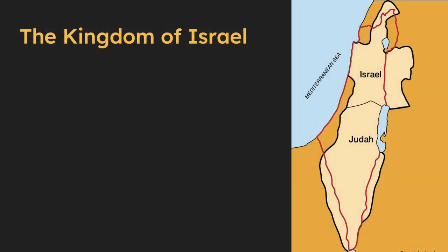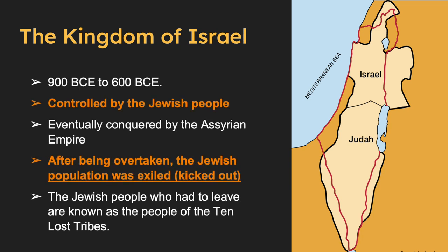The Kingdom of Israel was an ancient kingdom in the Levant, in what is now modern-day Israel and Palestine. It existed from approximately 900 B.C. to 600 B.C. The Kingdom of Israel was eventually conquered by the Assyrian Empire, and its population was exiled to other parts of the empire. These people are known as the Ten Lost Tribes.